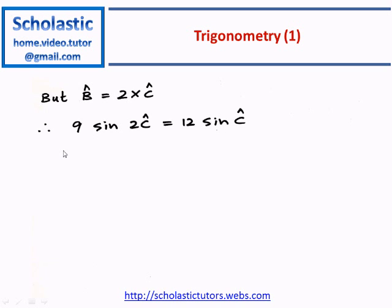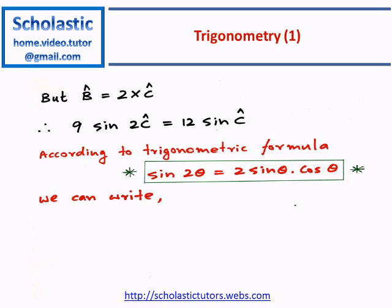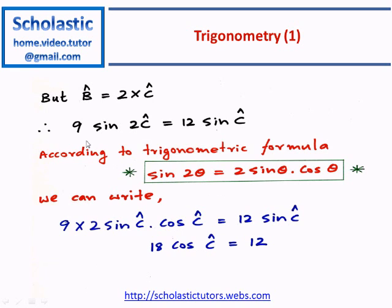We are going to use a trigonometric formula where sine 2θ equals 2 sine θ cos θ. We expand sine 2C using this formula. So 9 sine 2C will become 9 times 2 sine C cos C.